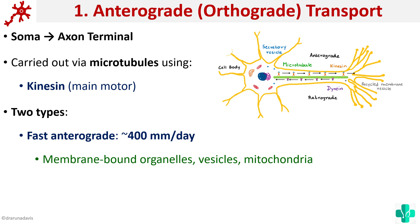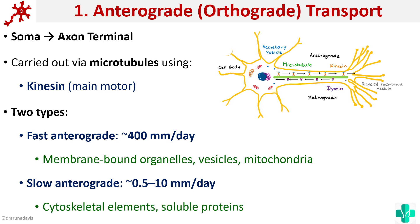The other type is slow anterograde, with a speed of 0.5 to 10 millimeters per day. Cytoskeletal elements and soluble proteins are usually transported by the slow anterograde transport.